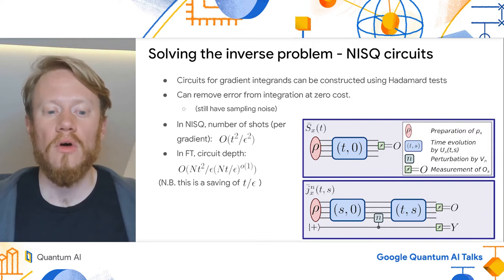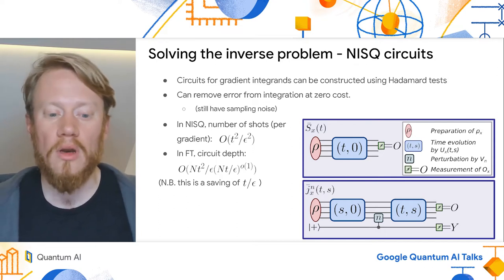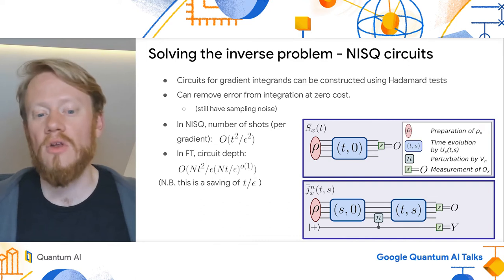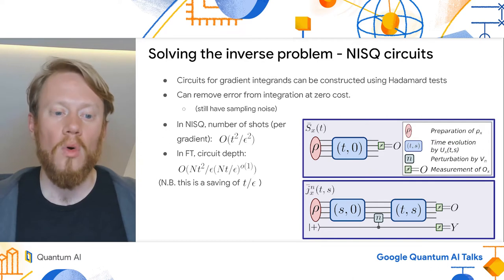In the fault-tolerant model, we give a total circuit depth, which isn't comparable to the NISQ costing on the previous line. The units aren't the same. In a fault-tolerant setting, one can use amplitude amplification to gain a saving of t over epsilon, giving a total circuit depth of n times t squared divided by epsilon, times an additional factor that can be made arbitrarily small.